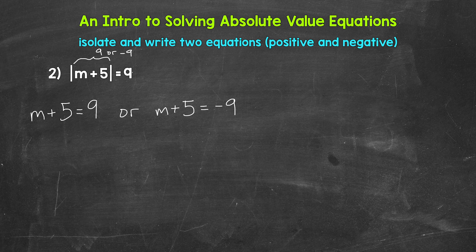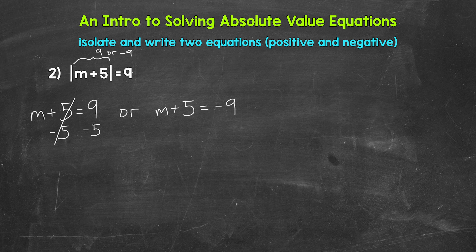Now we solve. Starting with m plus five equals nine — we need to isolate m. We are adding five to m, so we need to undo that. The inverse operation of addition is subtraction. Subtract five from both sides. The fives cancel each other out, so m equals nine minus five, which gives us four. So m equals four.